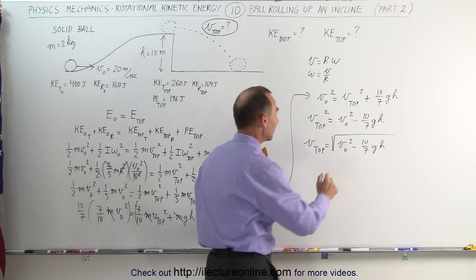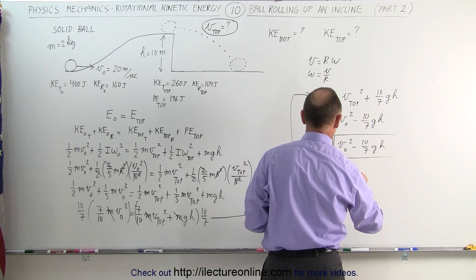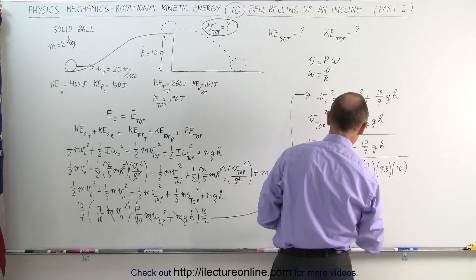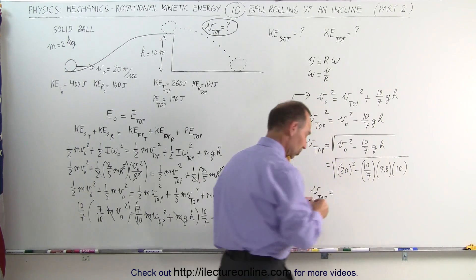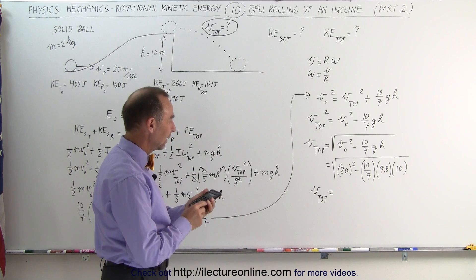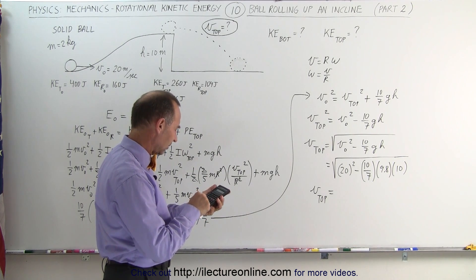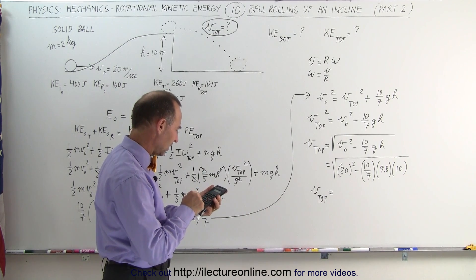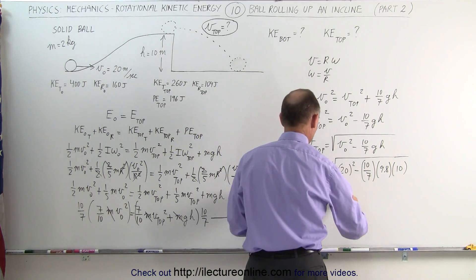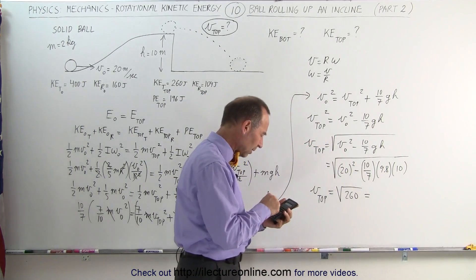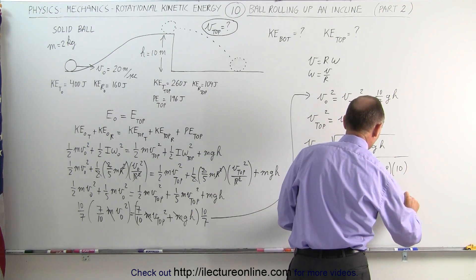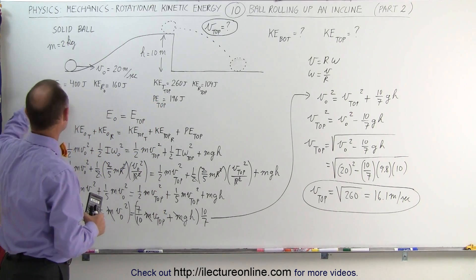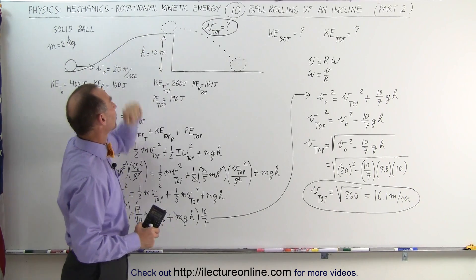Now plugging in the numbers: v-top equals the square root of v-initial, which is 20 meters per second squared, minus ten-sevenths, where g is 9.8 meters per second squared and h is 10 meters. That gives us the square root of 400 minus 980 divided by 7, which equals the square root of 260. Taking the square root, we get 16.1 meters per second — the velocity when the ball reaches the top. So it started at 20 meters per second at the bottom and slowed down to 16.1 meters per second at the top.